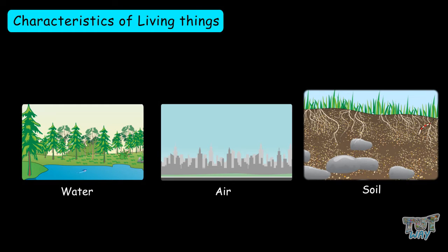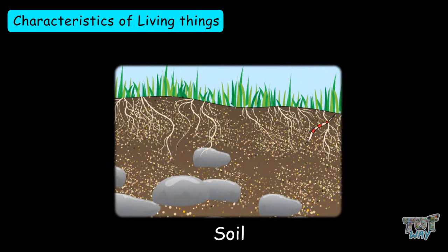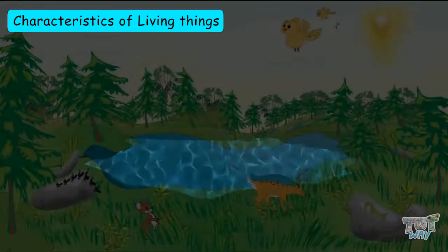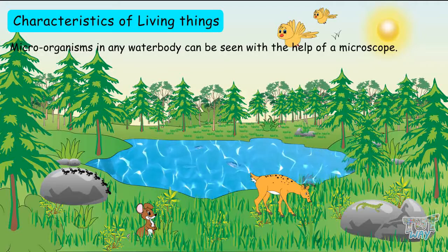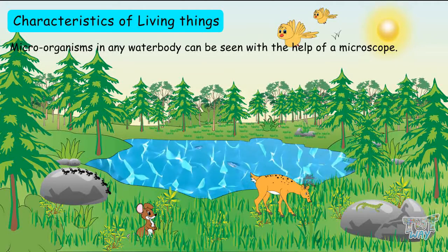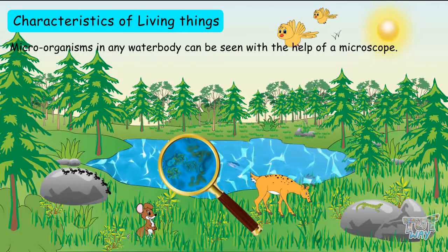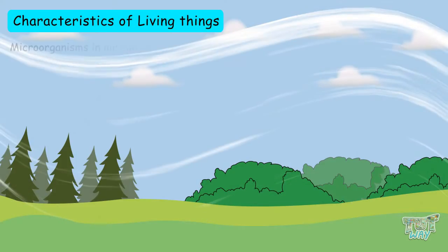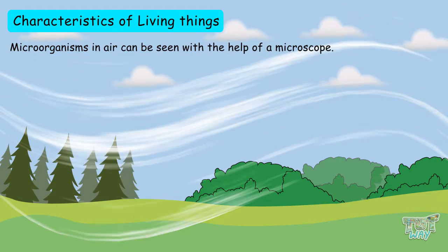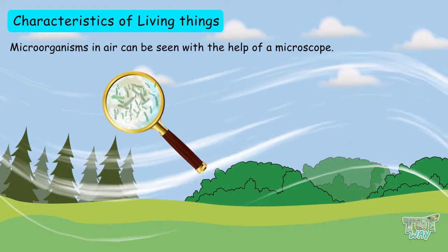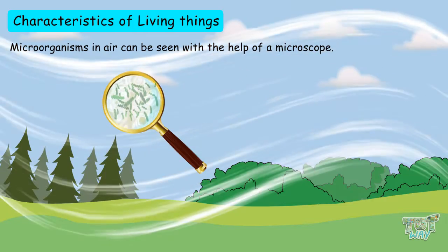For example, take a sample of soil — it has lots of microorganisms that you can't see. Take any sample of water from any water body; it has lots of microorganisms present that you can see with the help of a microscope, not with your naked eye. Even in the air you breathe, there are a lot of microorganisms that you can't see with your naked eye, but you can see them with a microscope.